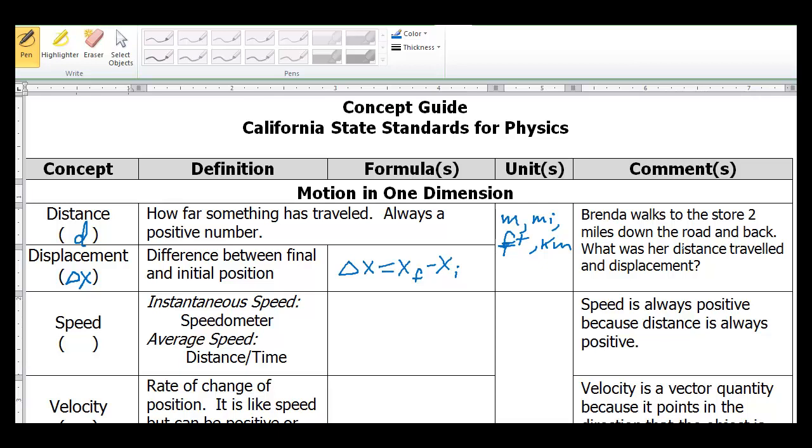Let's take a look at the comment over here. Brenda walks to the store two miles down the road and back. What was her distance traveled and displacement? Her distance is going to be 2 plus 2 equals 4 miles. Her displacement will be 0 because she started and ended at the same place. So there was no change between her final and initial position. So this is because xf equals xi.